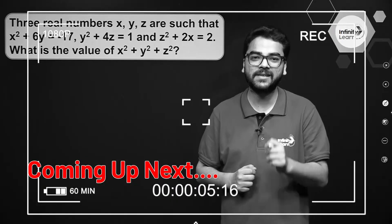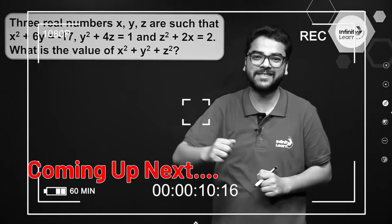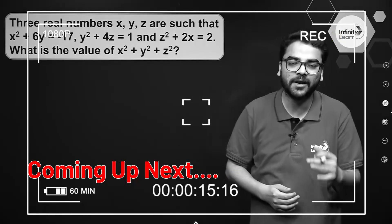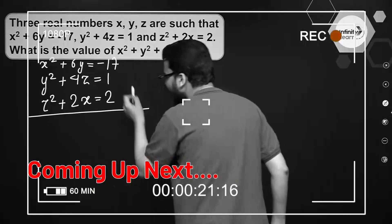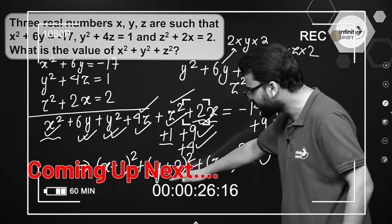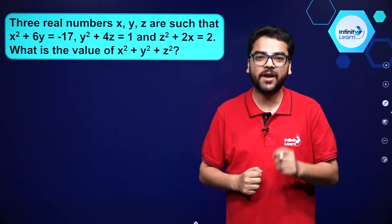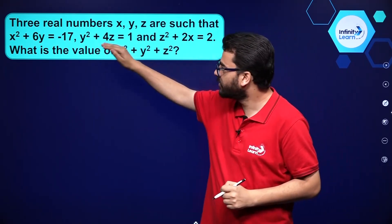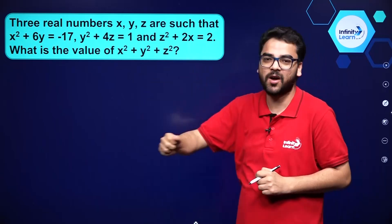Hello everybody. Here we have got a question on the basics of real numbers. You have got three equations in x, y and z, and you have to find the value of x square plus y square plus z square.